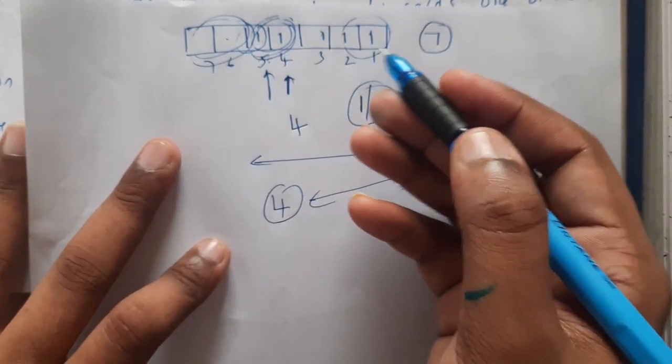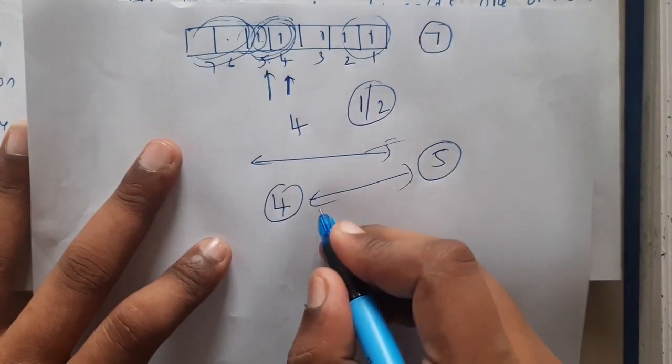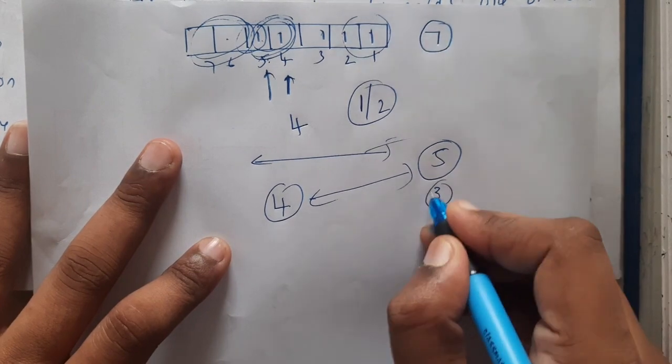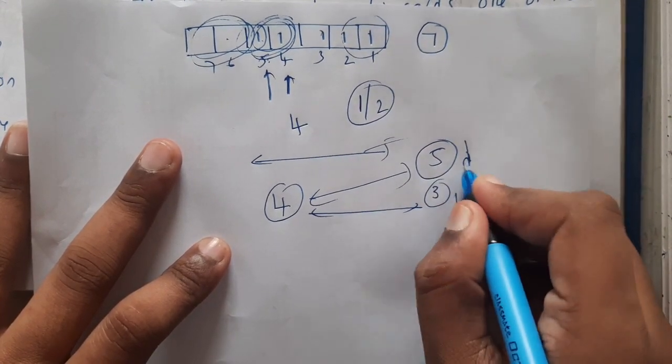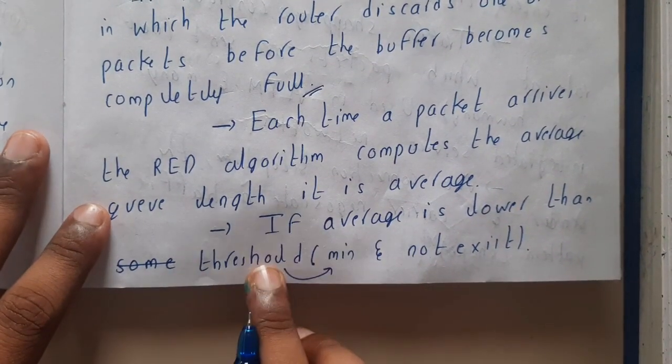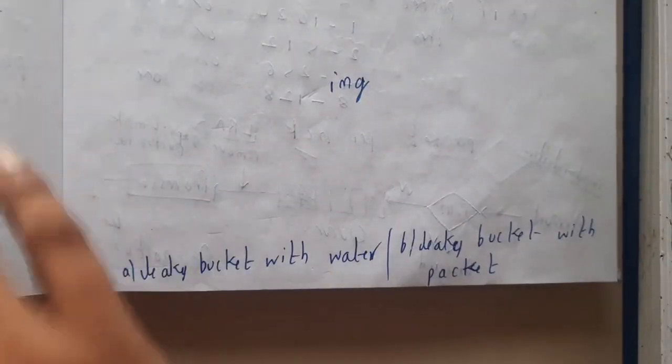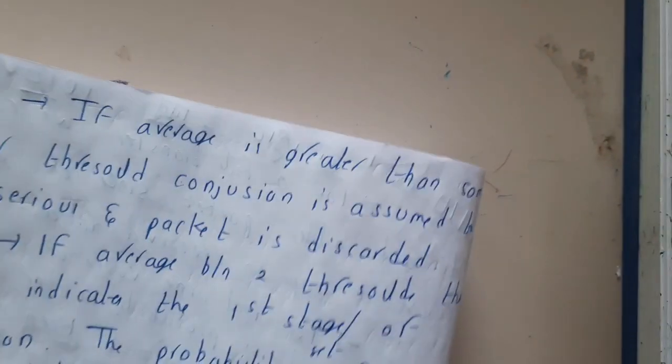If only three are occupied, there's nothing to do - you're safe. If average is lower than the threshold, do nothing. If average is greater than the upper threshold, then congestion is assumed to have occurred and is serious, so some packets are discarded.